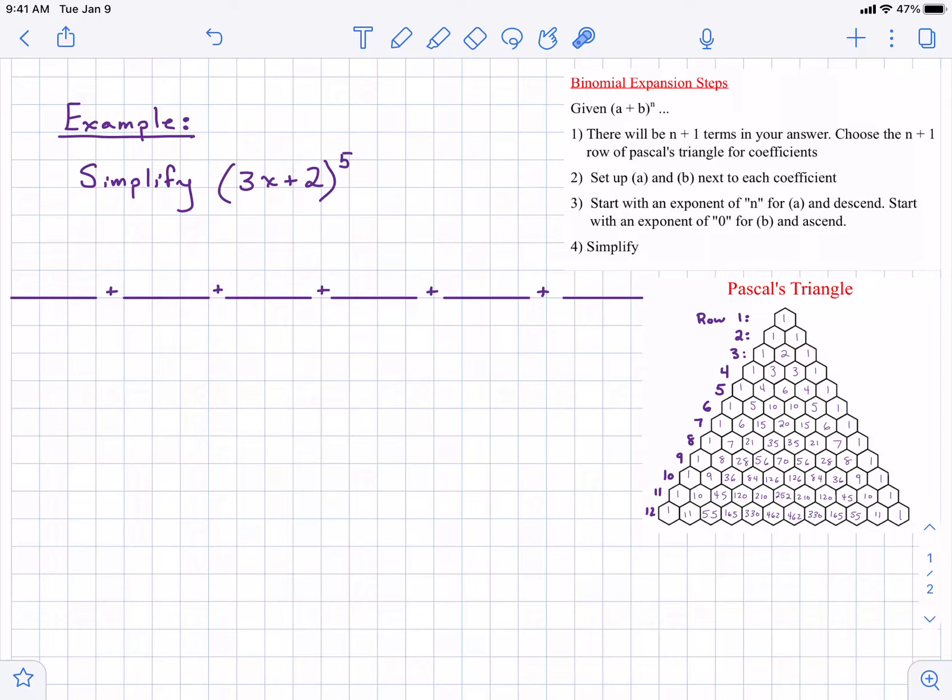We're also going to be utilizing row 6 of Pascal's triangle for our coefficients. I'll highlight that down there - that's important, it's going to come into play later on. What I like to do to set up my work is create these little platforms or stations. We're going to be putting several things within each term, so I like to give myself some space. Notice I have six of them because we have six terms in our final answer.